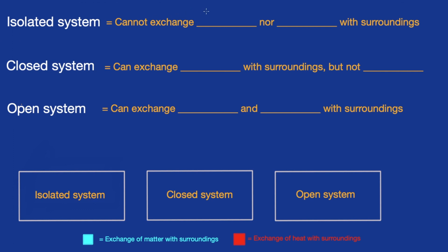Starting with isolated systems, these are systems that cannot exchange energy nor matter with their surroundings.